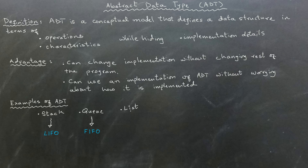As for a list, elements in the abstract data type can typically be accessed randomly using their index. In summary, an abstract data type provides a data structure based on its key operations and characteristics without detailing how the implementation is actually realized.